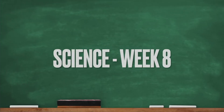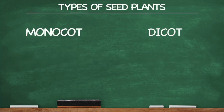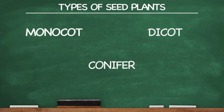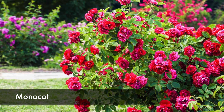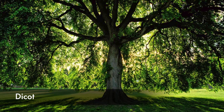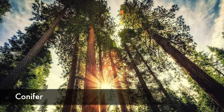Hey everybody, welcome back to science. Let me ask you a question: what are some types of seed plants? Monocot, dicot, conifer! Hey, there's only three — that makes this pretty easy. Plus they're cool words to say. Who doesn't love to say 'conifer'?